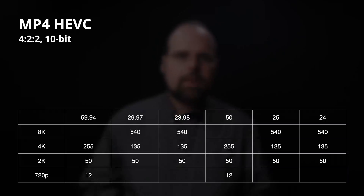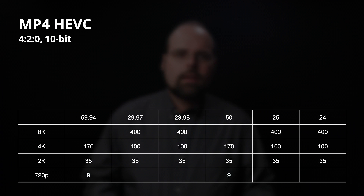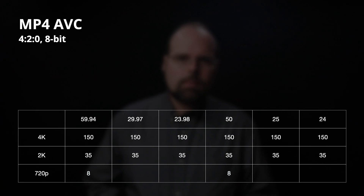Looking at MP4 bit rates: at 4:2:2 10-bit HEVC they max out at 540 Mbps for 8K at 30fps, dropping to 12 Mbps for 720p at 60fps. Stepping down to 4:2:0 10-bit HEVC, 8K at 30fps drops from 540 to 400 Mbps, and 720p at 60fps drops from 12 to 9 Mbps. In 8-bit 4:2:0, 8K is not available — the highest option is 4K at 50/60fps at 150 Mbps, with 720p at 50/60fps as low as 8 Mbps.